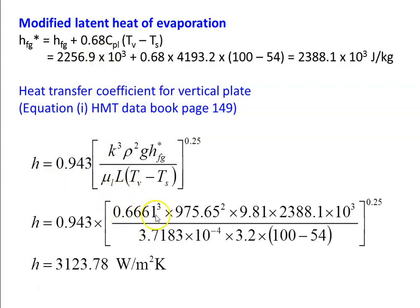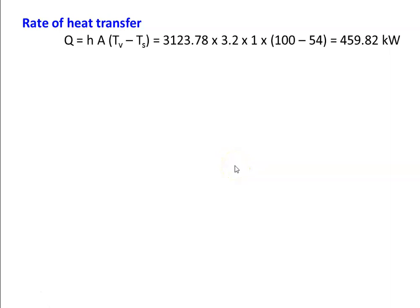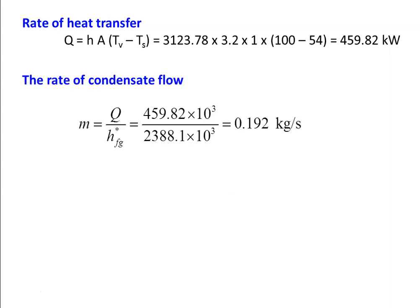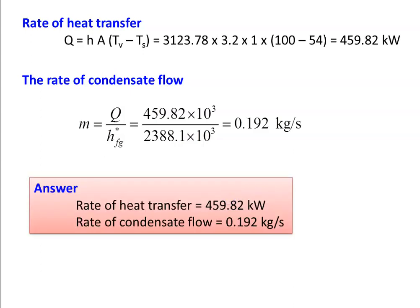Carefully check the substitution: K = 0.6661, ρ = 975.65, g = 9.81, HFG* = 2388.1 × 10³, μ = 3.7183 × 10⁻⁴, L = 3.2 m, and Tv − Ts = 100 − 54 = 46°C. The rate of heat transfer Q = H × A × (Tv − Ts) = 3123.78 × 3.2 × 1 × 46 = 459.82 kW. The rate of condensate flow M = Q / HFG* = 459.82 × 10³ / 2388.1 × 10³ = 0.192 kg/s. So the answers are: rate of heat transfer = 459.82 kW and rate of condensate flow = 0.192 kg/s.